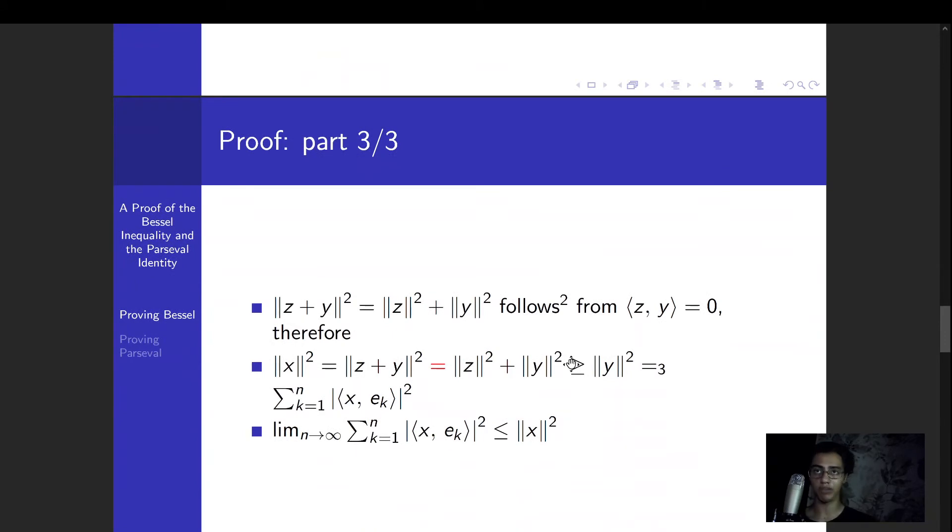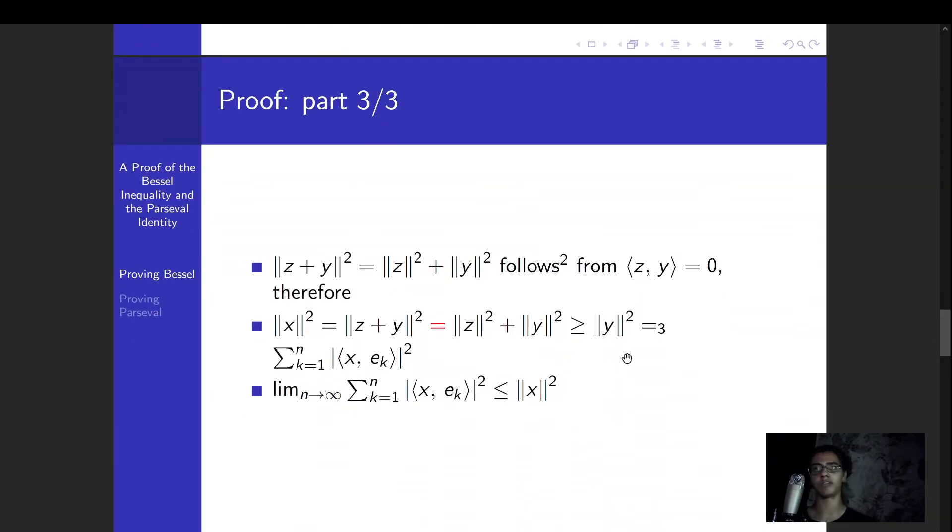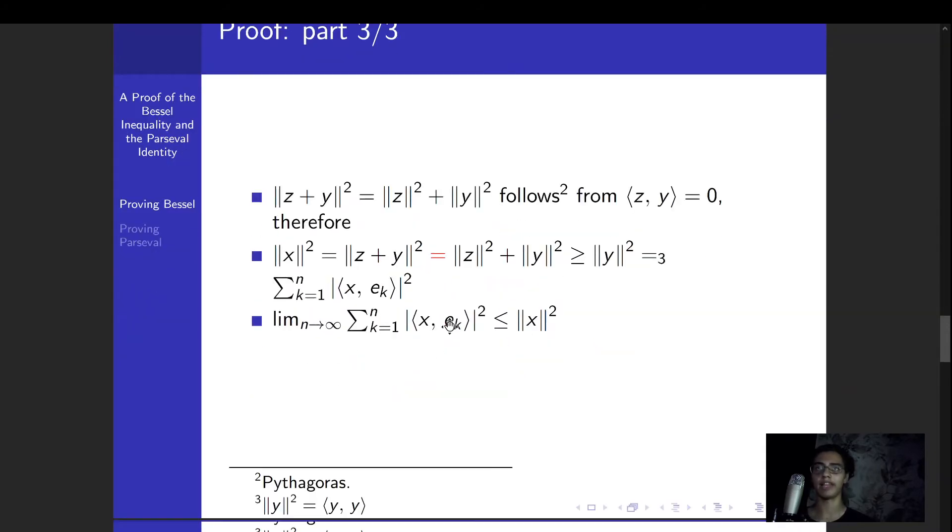And the final part of our proof is using that result above, that z and y are orthogonal, to get to Pythagoras, which is this one equality up here. So Pythagoras, a more general version of Pythagoras for inner product spaces. Given the assumption that z and y are orthogonal, we have this equality. And so now, it's just one final step to get to the Bessel inequality.